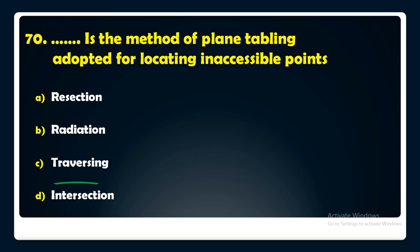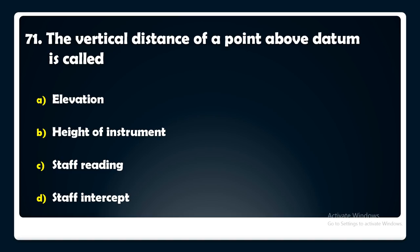The vertical distance of a point above datum is called — elevation, height of instrument, staff reading, or staff intercept? The answer is: the vertical distance of a point above datum is called elevation.